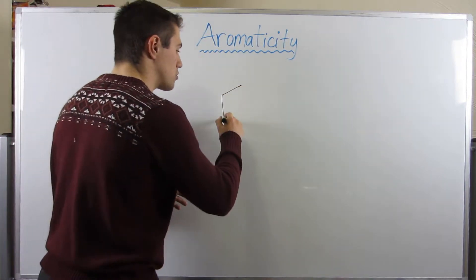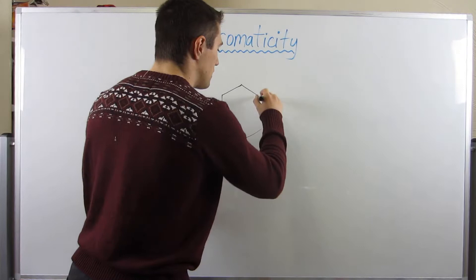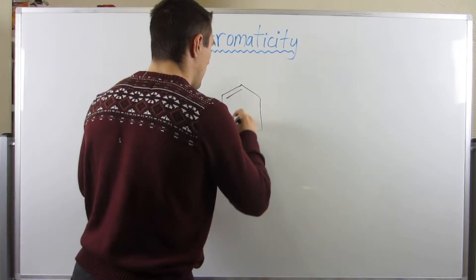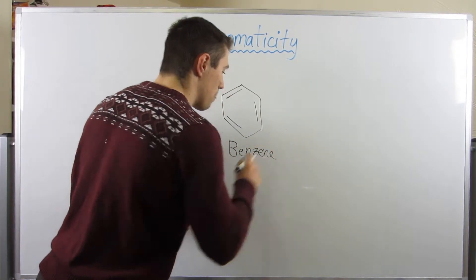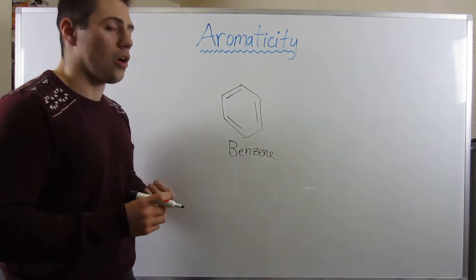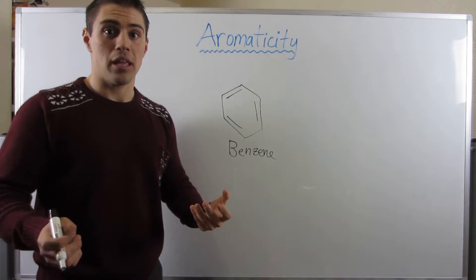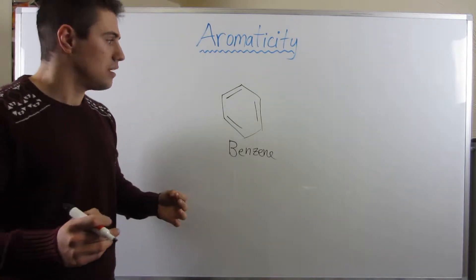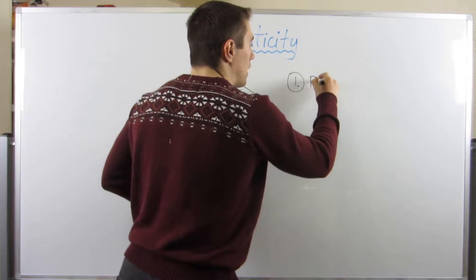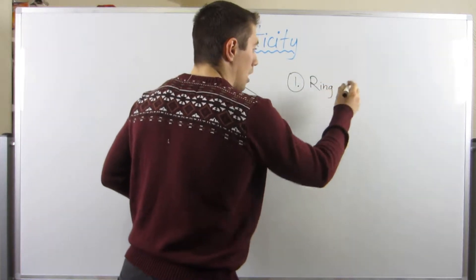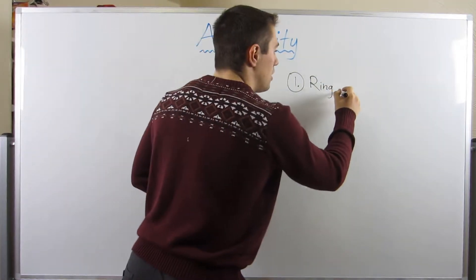I want to first talk about what aromaticity is and the consequence of being aromatic. So I'm sure you've seen this structure once or twice or a million times since you started taking O-chem, and I'm sure you've heard the name benzene at least once. Benzene is what we would call an aromatic structure. And here's what it means to be aromatic. Basically, there are three conditions. You need to be a ring, and not just a ring, you need to be conjugated.